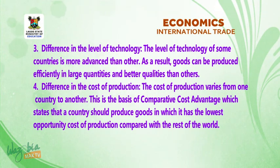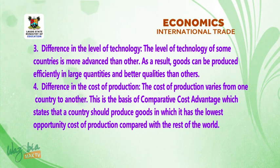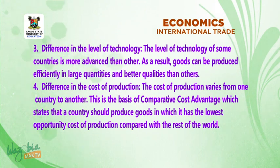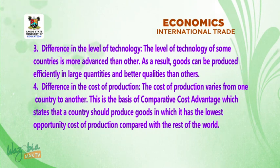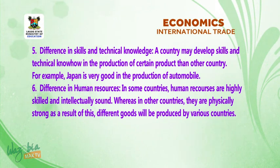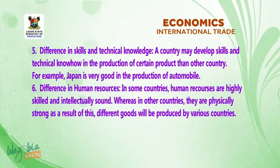3. Difference in the level of technology. The level of technology of some countries is more advanced than others. As a result, goods can be produced efficiently in large quantities and better quality than others. 4. Difference in the cost of production — the cost of production varies from one country to another. This is the basis of comparative cost advantage, which states that a country should produce goods in which it has the lowest opportunity cost of production compared with the rest of the world. 5. Difference in skills and technical knowledge — a country may develop skills and technical know-how in the production of certain products more than other countries. For example, Japan is very good in the production of automobiles.